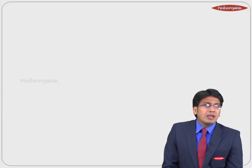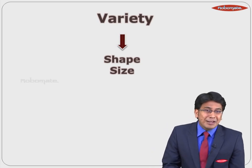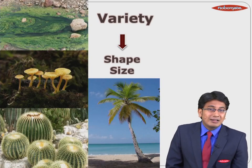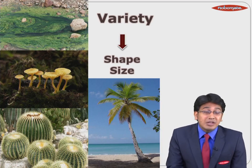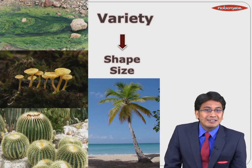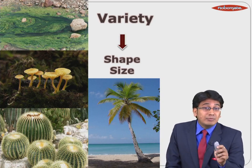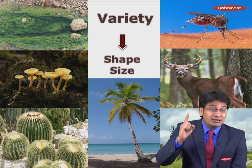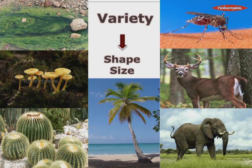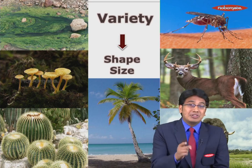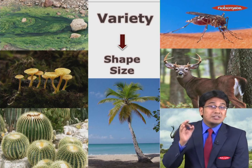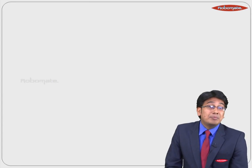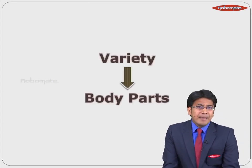There is abundance of variety in shape and size of different types of plants. Algae, fungi, cactus, and coconut tree — they all are plants, but they are totally different from each other. There is variety of shape and size in animals too. A mosquito, a deer, and an elephant — they all are animals, but they look completely different in their shape and size. Not only in shape and size, but every animal also differs in their body parts. So there is a big diversity in body parts.